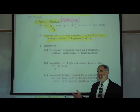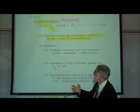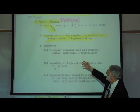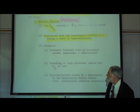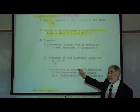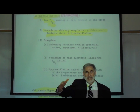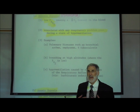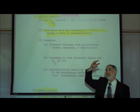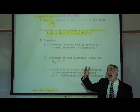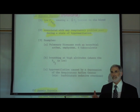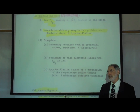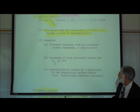What are some examples of hypoxic hypoxia or hypoxemia? Pulmonary diseases such as bronchial asthma, emphysema, and tuberculosis. Another cause would be breathing at high altitudes. In this case, it's not because somebody's lungs are having a problem breathing, but the thinner air — the less oxygen at high altitudes — results in lower levels of oxygen in the alveoli and therefore less oxygen in the bloodstream.